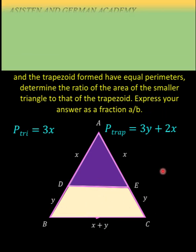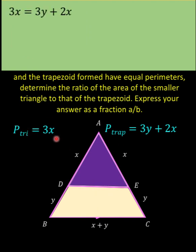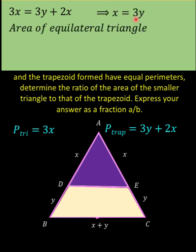Since these two perimeters are equal, we equate: 3X equals 3Y plus 2X. Subtracting X from both sides of the equation, we now have X equals 3Y.